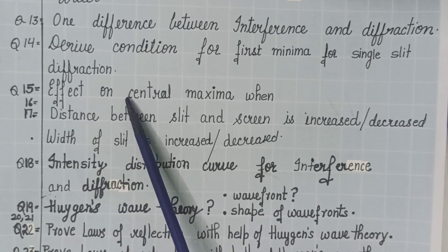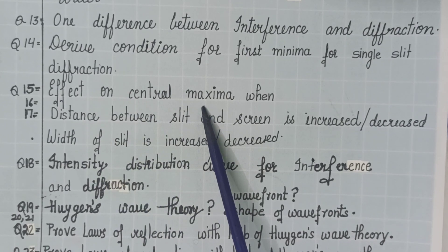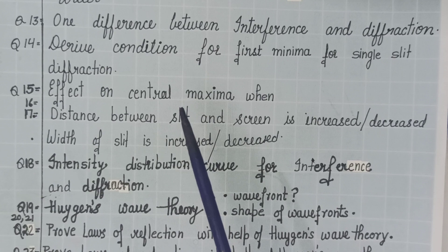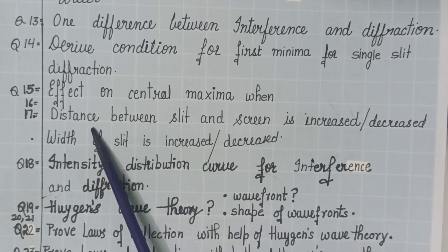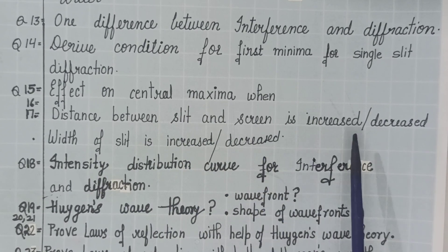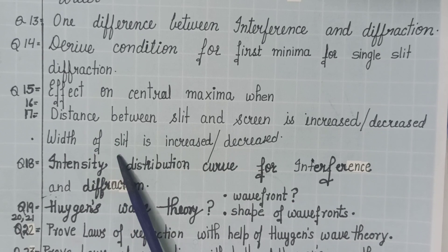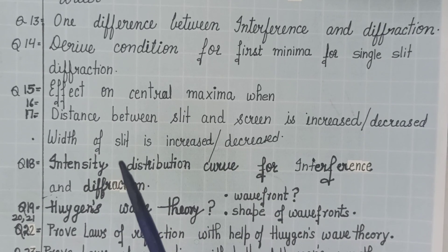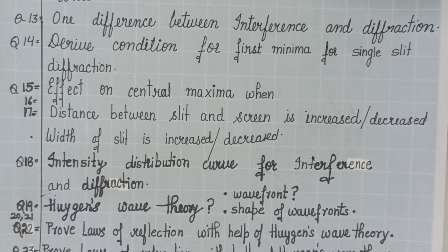Derive condition for first minima for single slit diffraction. Very, very important. What will be effect on central maxima in single slit diffraction experiment when distance between slit and screen is increased or decreased? Width of the slit is increased or decreased. Very important for diffraction for optics.